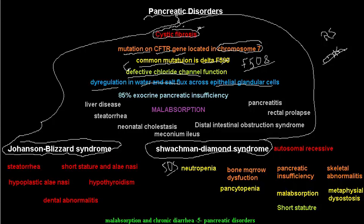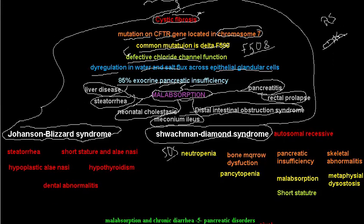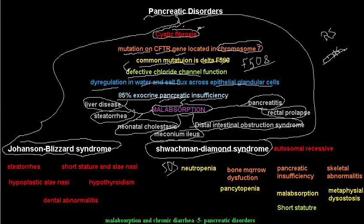One of the organs affected in cystic fibrosis is the pancreas — in 85% of cases it leads to exocrine pancreatic insufficiency, causing malabsorption. Symptoms of cystic fibrosis include liver disease, steatorrhea due to malabsorption, neonatal cholestasis, meconium ileus, distal intestinal obstruction syndrome, rectal prolapse, and pancreatitis.